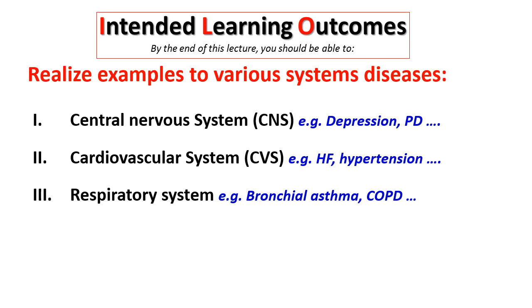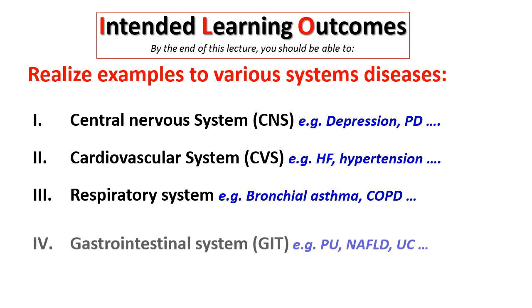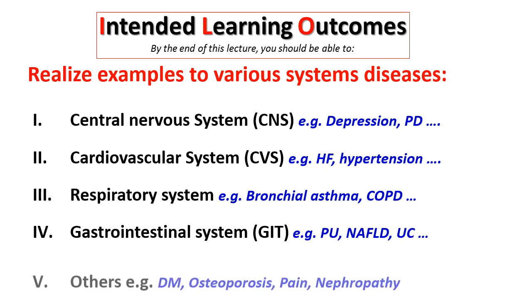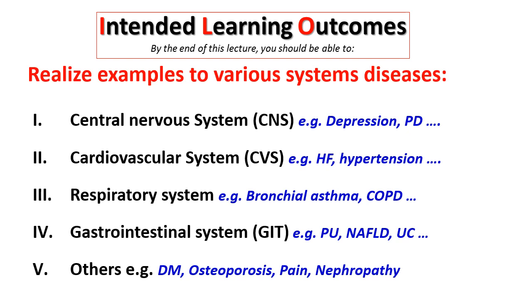Number three: respiratory system, for example, bronchial asthma model, COPD model. Number four: GIT models, like peptic ulcer, ulcerative colitis, liver fibrosis. Number five: other models, like diabetes mellitus type 1 and 2, osteoporosis, pain, and nephropathy.